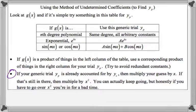So when that happens, when our generic y sub p is already accounted for by y sub c, you do something that feels a little strange. You actually just multiply your guess by x. And if that's already there, you multiply by x squared. And if that's already there, you multiply by x cubed. And you can actually just keep going until you get to a higher power than is already accounted for.